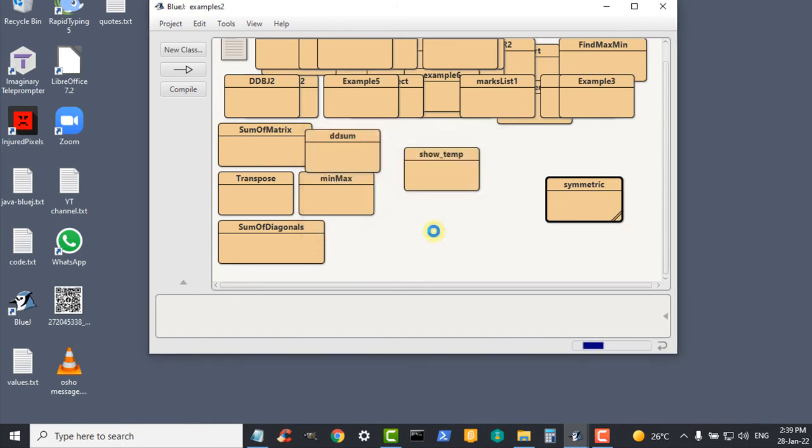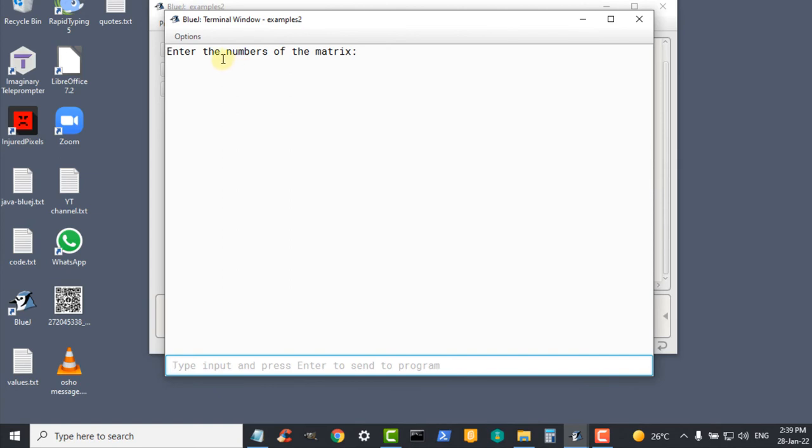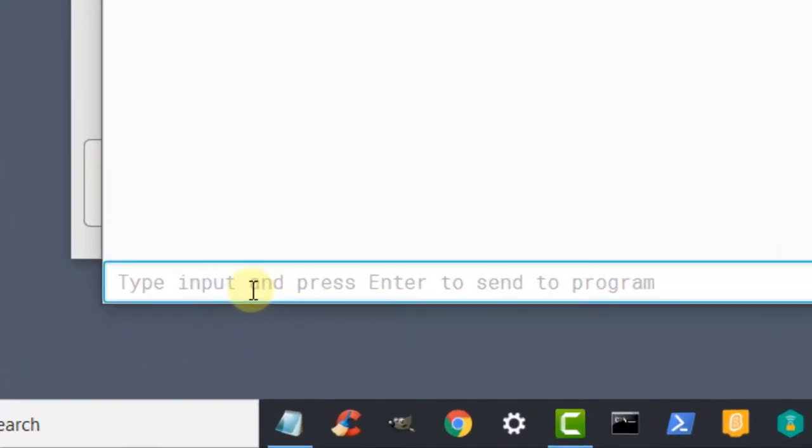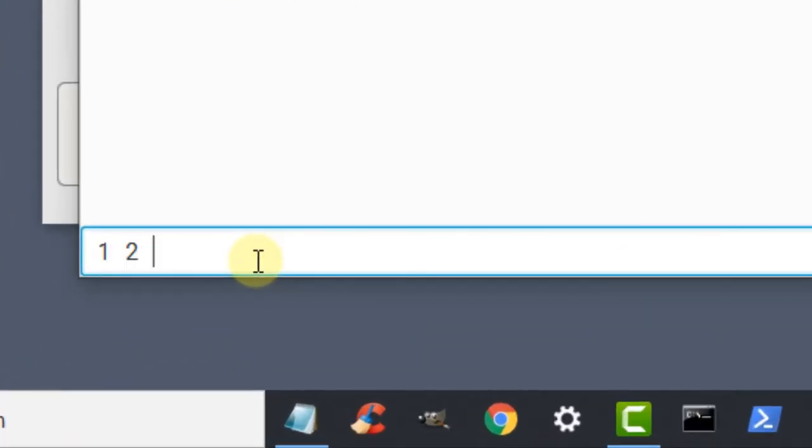Press OK. Enter the numbers of the matrix. As we know, we need to check whether the given matrix is symmetric or not, so first we will enter the numbers of a symmetric matrix from our example: 1 2 3, 2 4 5, 3 5 6. So this is the symmetric matrix from our example.